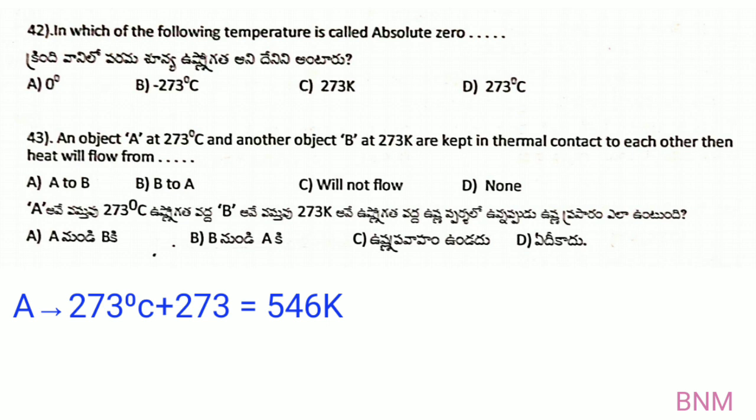The following temperature is called absolute zero. The temperature is -273°C, which is equal to 0 Kelvin. This is absolute zero, so C is the right answer.